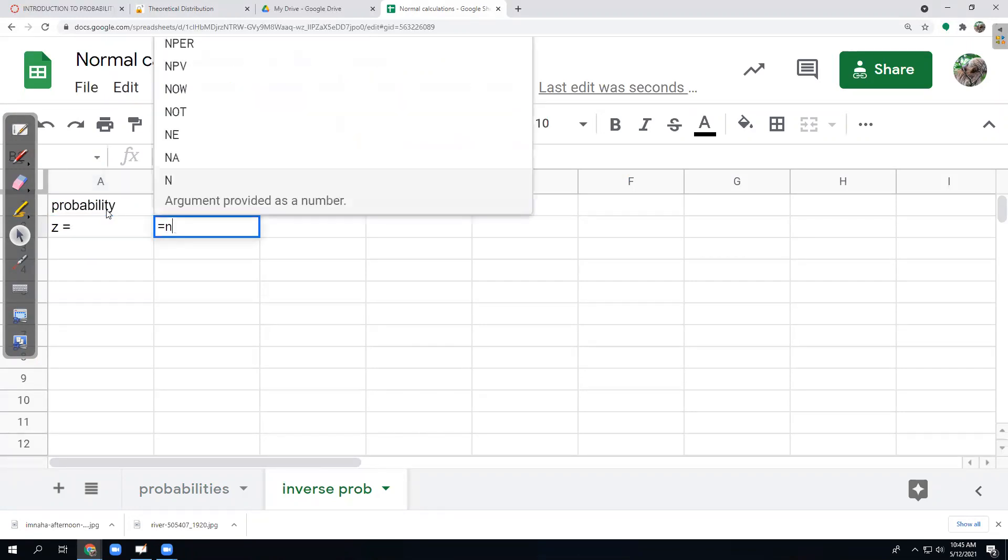So if I start typing norm for normal stuff, it's got a bunch of options. And I want to do the reverse, the inverse of a normal distribution. Which means, instead of given a z-score, find the probability. It says given the probability, find the z-score. And again, StatKey is the easier way, but this gives us more decimals when we need them. And the correct one to use here is norm dot inverse.